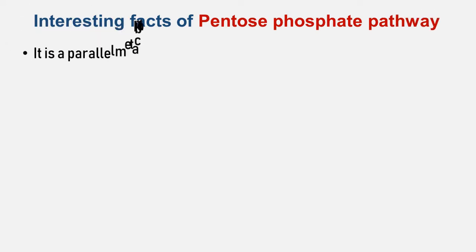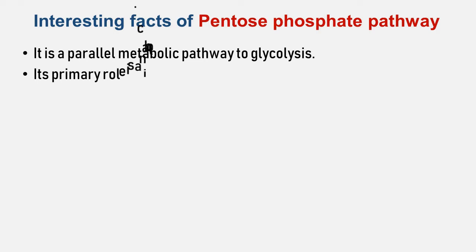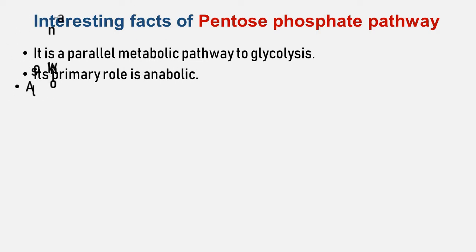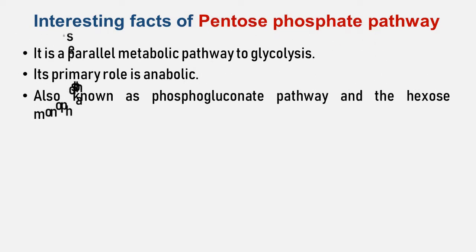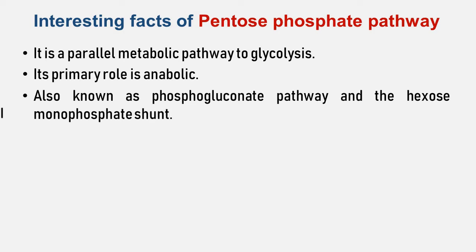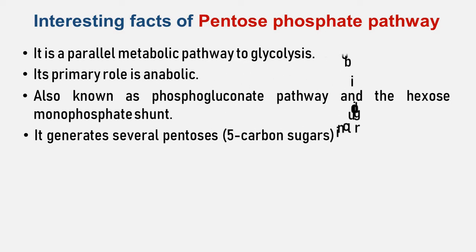The pentose phosphate pathway is a metabolic pathway parallel to glycolysis. While it does involve oxidation of glucose, its primary role is anabolic rather than catabolic. It is also called the phosphogluconate pathway and the hexose monophosphate shunt, because it pushes the glucose-6-phosphate — that is, hexose monophosphate — from the main pathway to a sideline pathway. This process is called shunting.